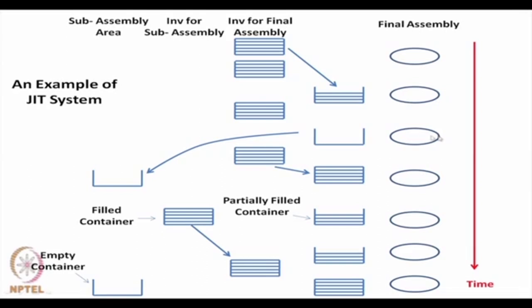Then after another 10-15 minutes, the first container is totally empty and the second container is still full. After some time, the second container moves to the final assembly area for use. Simultaneously, the empty first container goes to the sub-assembly area. As the second container is being used for final assembly and gets partially filled down, the empty container is refilled at the sub-assembly area and passed on to the final assembly area, so it is ready just as the second container is about to be empty.